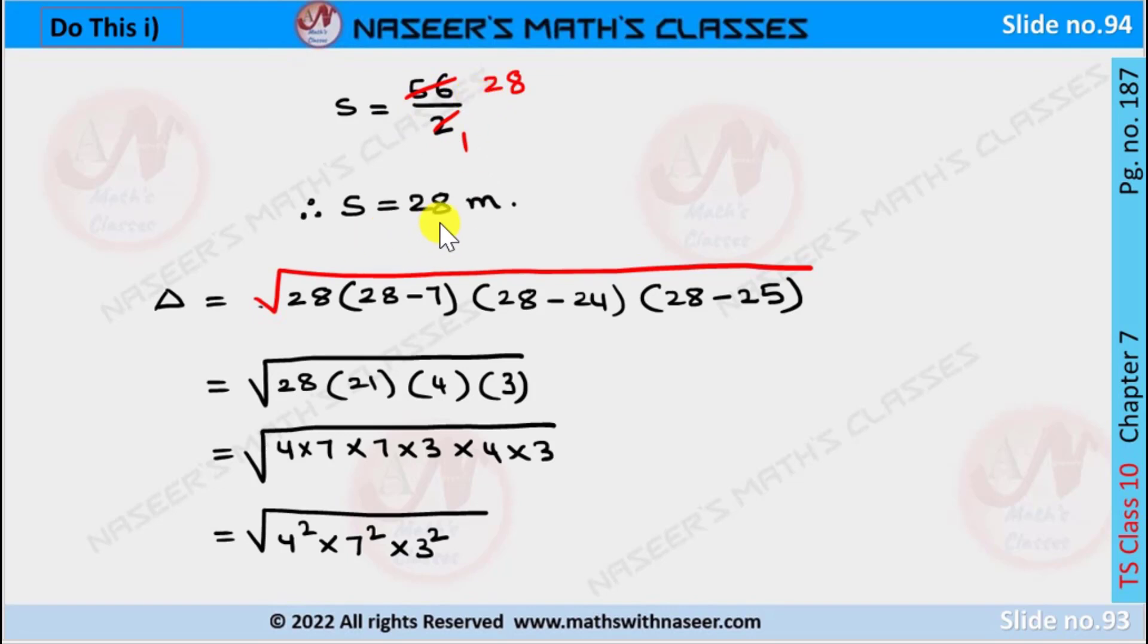So S equals 28 meters. Now we substitute the S, A, B, C values into the formula. Then Δ is written as square root of 28(28-7)(28-24)(28-25).